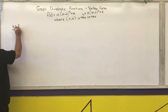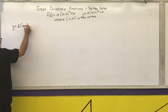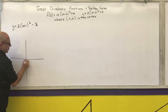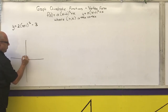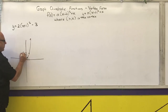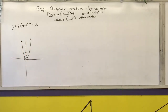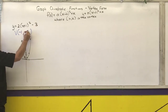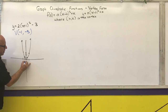First example: y equals 2 times x plus 1 squared minus 3. The y equals x squared generic graph gives points (0,0), (1,1), (2,4). Then for the equation: the vertex is at the opposite of the number in parentheses and the same as the number added or subtracted outside. So my vertex is at negative 1, negative 3.